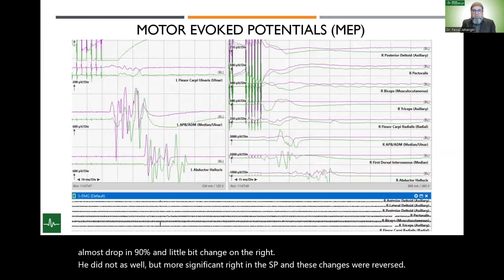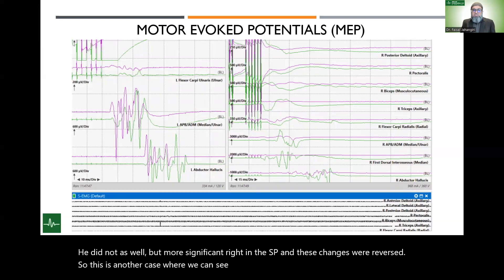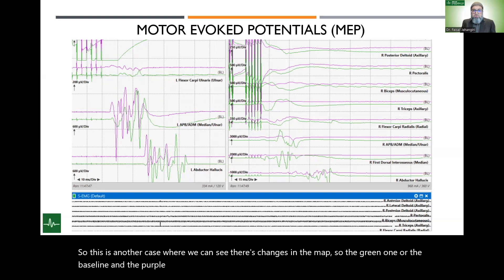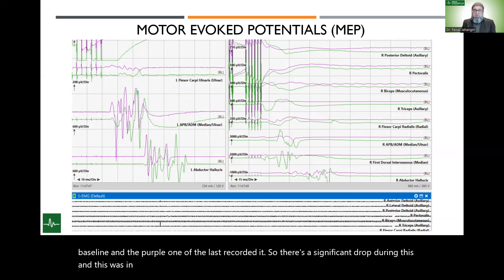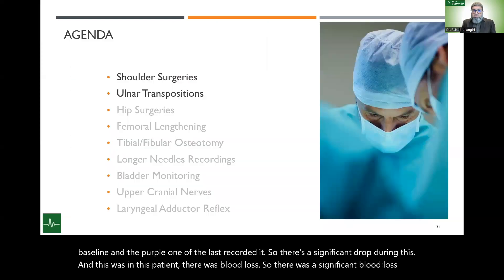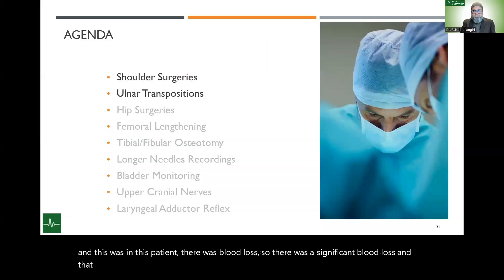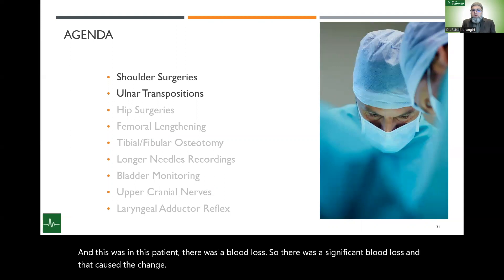This is another case where we see changes in the MEP. The green trace is the baseline and the purple is the last recorded state, showing a significant drop. In this patient, there was a significant blood loss, and that caused the changes in the MEP.